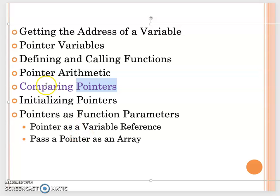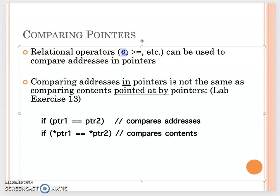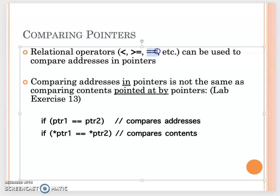The first thing is how to compare pointers. Pointer comparison includes the relational operators — we can use less than, greater than, or equal. You can also use greater-than-or-equal, less-than-or-equal, or equal-equal. Those are all the relational operators we can use for pointer comparison. When you use these operators, you are comparing the address stored in the pointer.